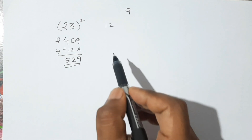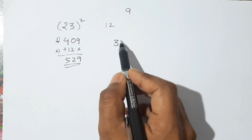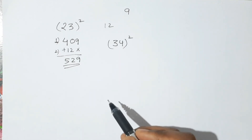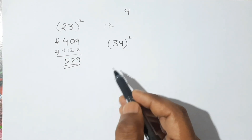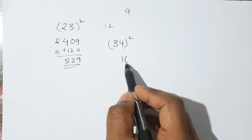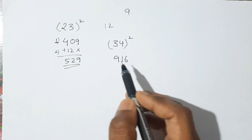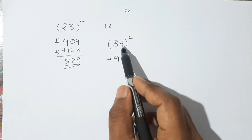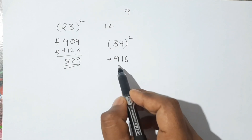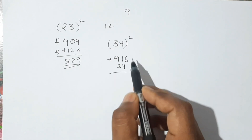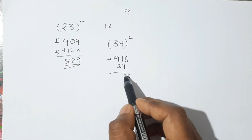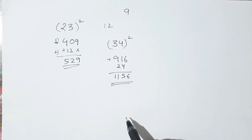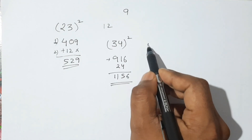Let's see another number — 34 square. First step: find the square of each digit separately. 4 square is 16, 3 square is 9. Second step: multiply all the digits — 3 into 4 is 12, 12 into 2 is 24. We add 24 here, giving us 6, then 5, then 11 — carry 1 — so 9 plus 2 is 11. This is the square of 34, which is 1156.